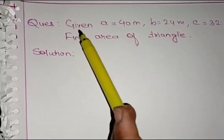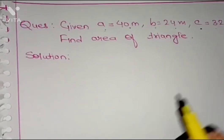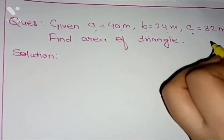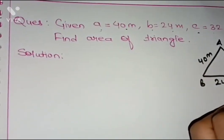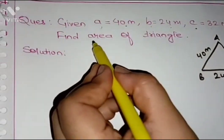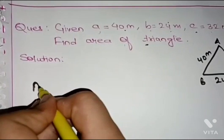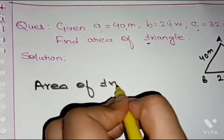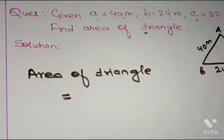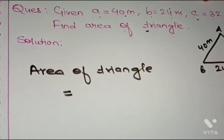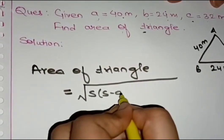The question: in a triangle, the three sides are given — side a = 40 m, b = 24 m, and c = 32 m. We draw the triangle ABC with these sides. Since three sides are given and no height is given, we use Heron's formula: Area = √(s(s−a)(s−b)(s−c)).